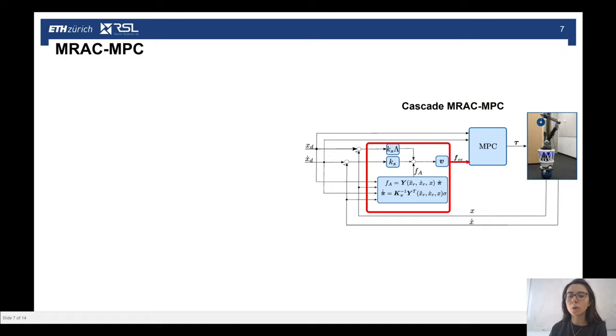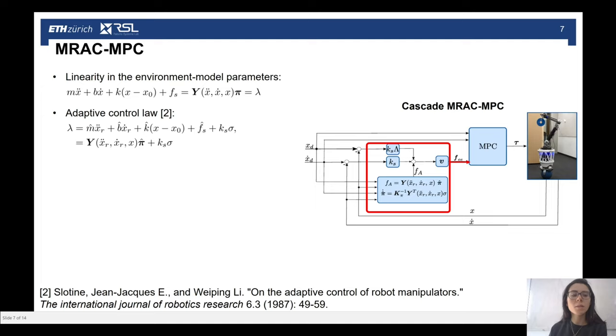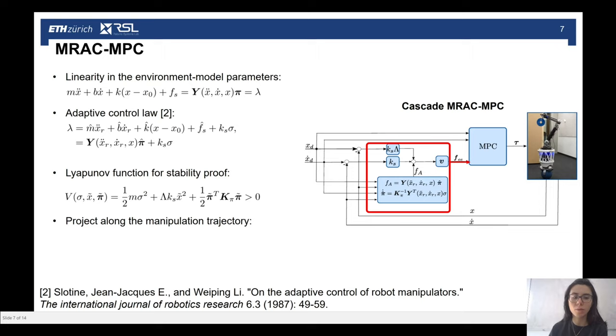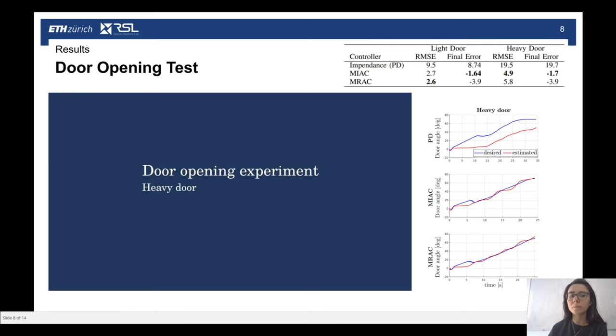In a second implementation, we do not update the environment model through system identification, but rather we compute a desired interaction force at the end-effector according to a model reference adaptive control approach or MRAC. Usually, this name refers to a wider class of adaptive controllers. In this work, we in particular refer to a non-classical adaptive control approach, which exploits the linearity in the parameters of the system model, which in this case is the environment model. The adaptive control law, together with the parameters adaptation law and the certification of the system stability, can be obtained through the use of a Lyapunov function. If we project the control law along the manipulation trajectory, we can give it as a reference to be tracked by the MPC.